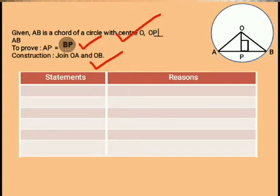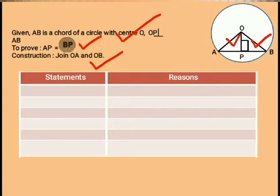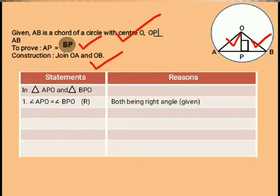The first target is to show triangle APO and triangle BPO as congruent triangles. From the figure, we can write that angle APO is equal to angle BPO, both being right angles, that is 90 degrees, as given by the question.